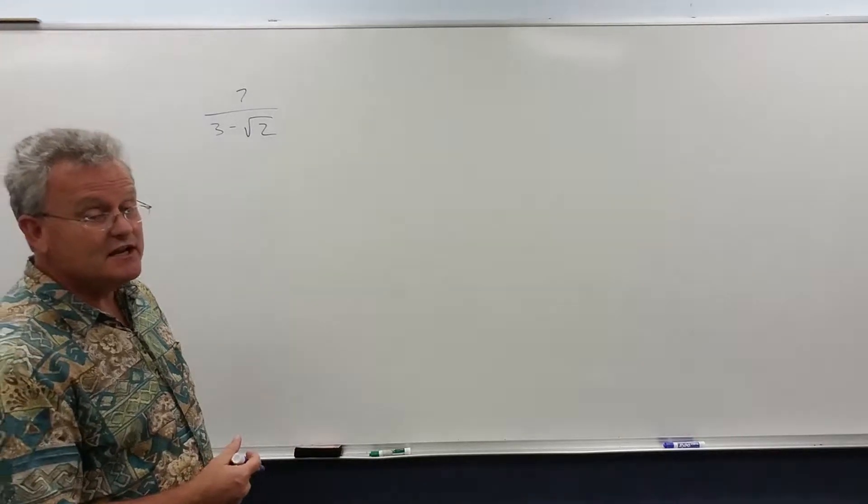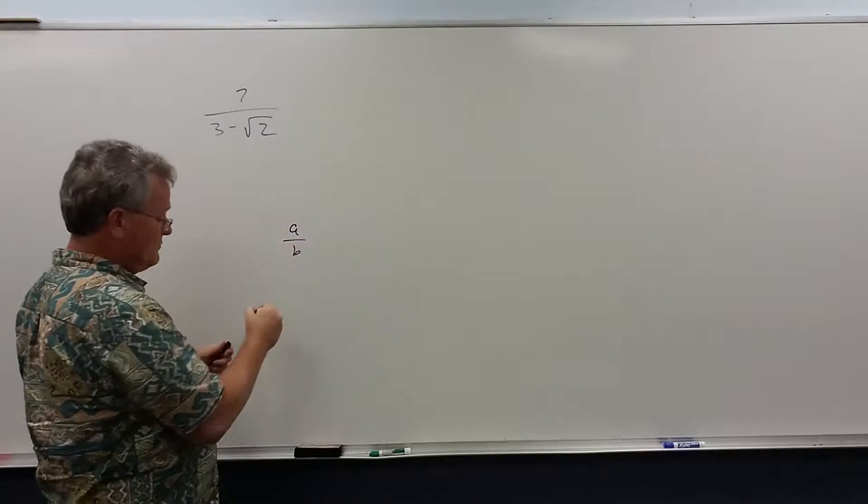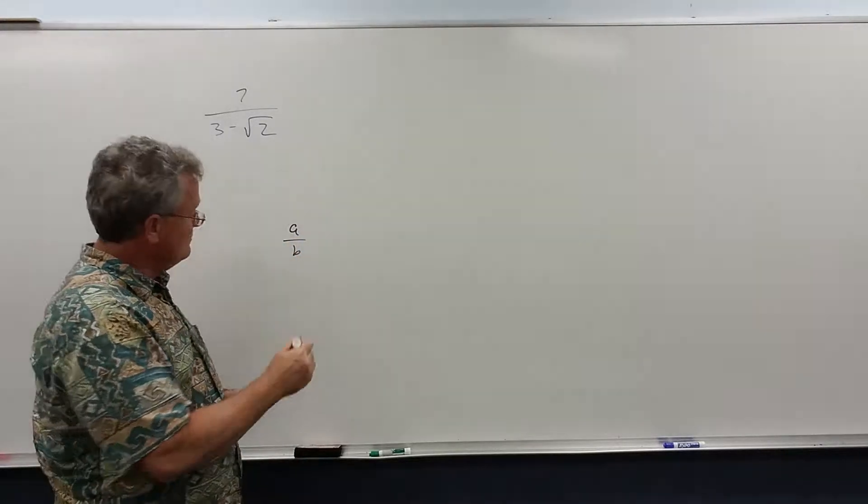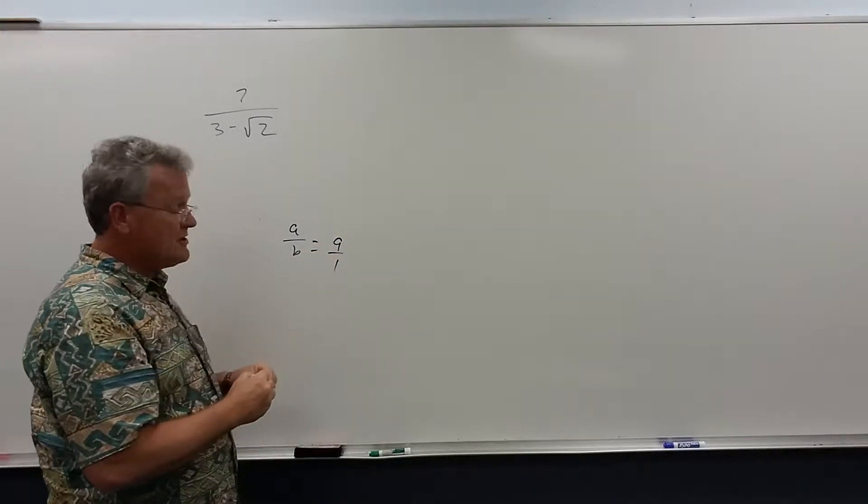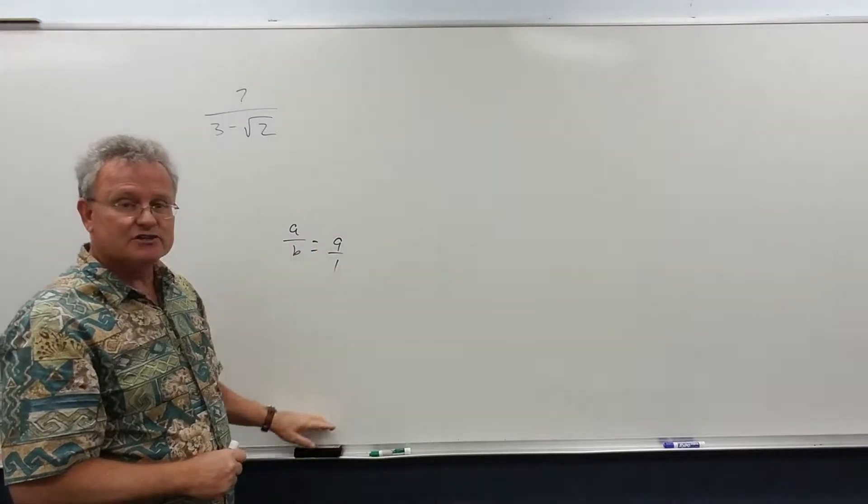Remember a rational number is any number that can be written as a fraction, a over b, where a and b are integers. If b is 1 we end up with a whole number a or an integer depending on the value of a, but that's still a rational number.